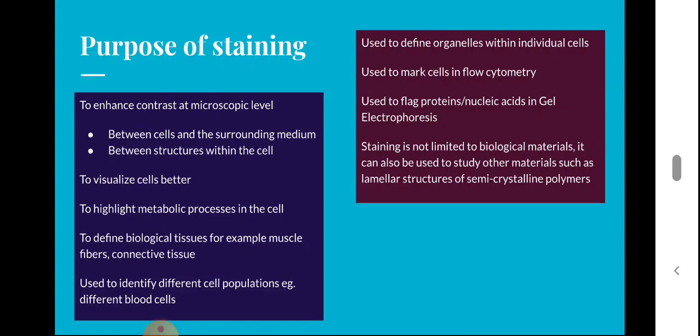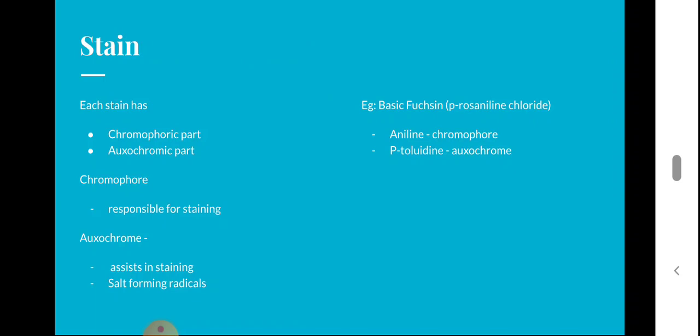Staining is also used to identify different cell populations — for example, different types of blood cells can be identified by staining. It is used to define organelles within individual cells, to mark cells in flow cytometry, and to flag proteins or nucleic acids in gel electrophoresis. Staining is not limited to biological materials; it can also be used to study other materials such as lamellar structures of semi-crystalline polymers.